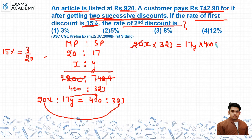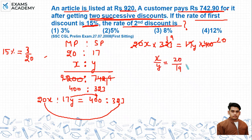Solving this equation, x and y come out such that the ratio is 20 to 19. So x to y equals 20 ratio 19.